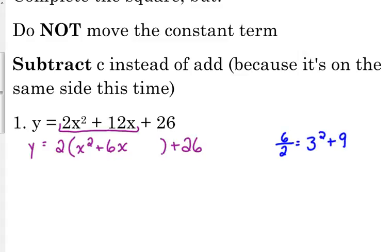So 6 is our b divided by 2 is 3. 3 squared is 9. So we do add our 9 there, completing the square. Perfect square trinomial is always going to be plus the perfect square at the end.